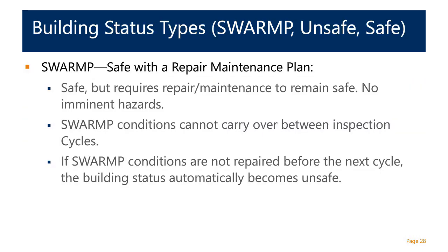If a building is classified as SWAMP, it is generally considered safe right now but needs repairs to maintain that status. If there are any imminent hazards, the building cannot be classified as safe with repair and maintenance. Importantly, if a condition is noted as SWAMP during one cycle — say cycle eight — it must be repaired prior to filing in cycle nine. No conditions can carry over between inspections. If a condition were to carry over, it would automatically be classified as unsafe.